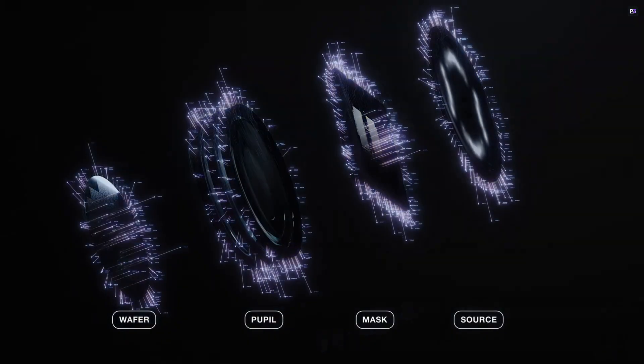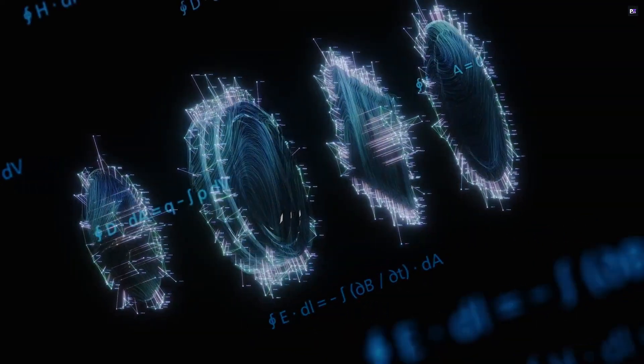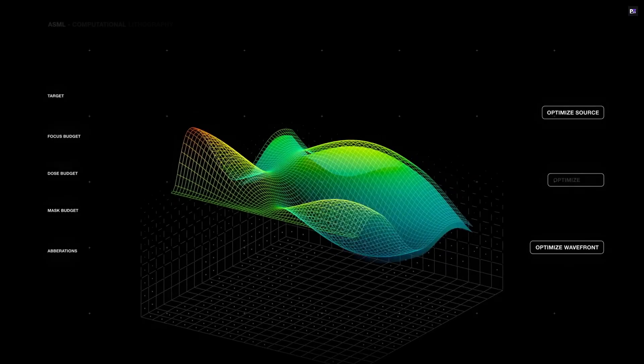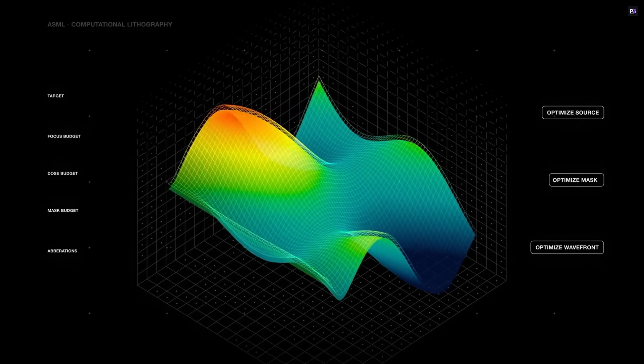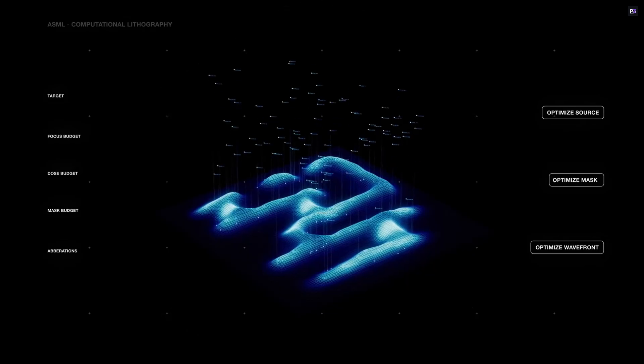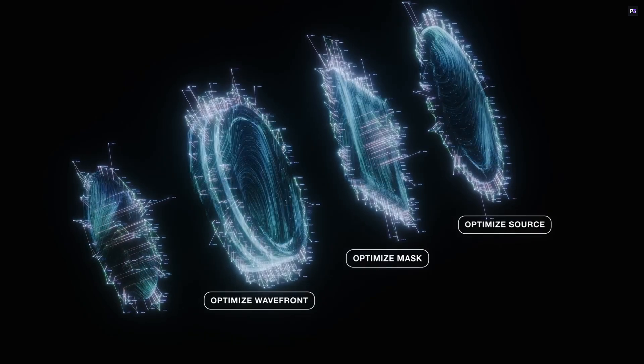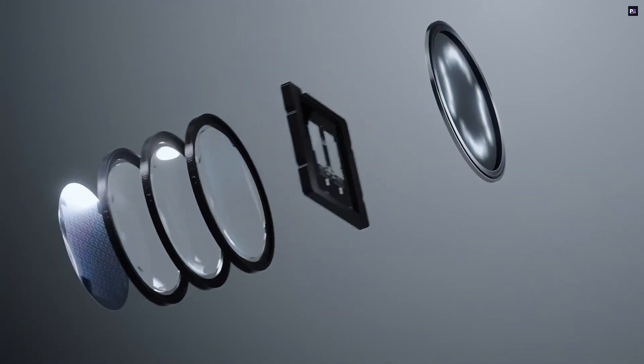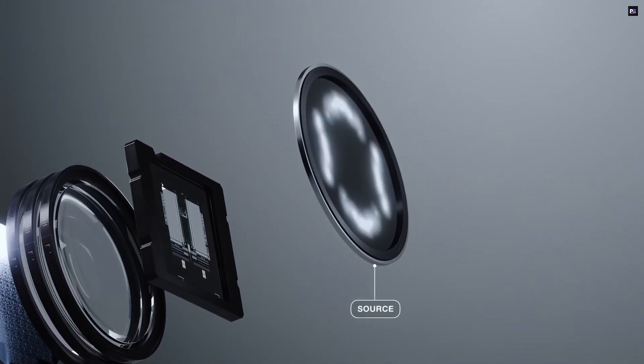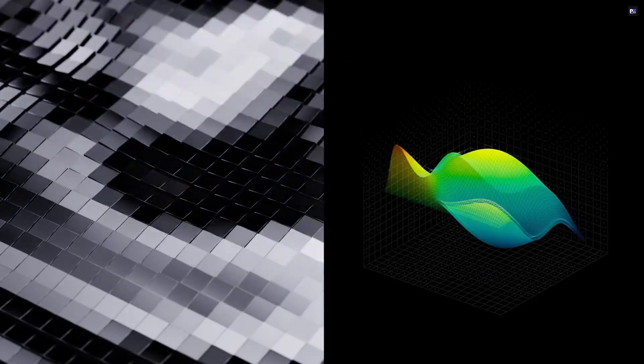ASML doesn't stop there. They integrate this powerful approach with other innovations, like optical metrology, e-beam inspection, and machine learning. This whole system streamlines the chip production pipeline, making fabrication more efficient and accurate. This groundbreaking work is vital for pushing forward industries like artificial intelligence, smartphones, automotive technology, and telecommunications.